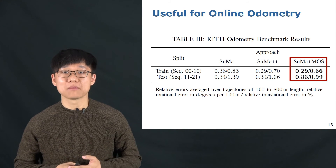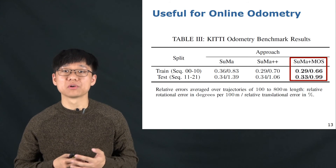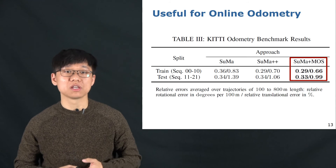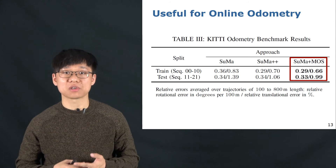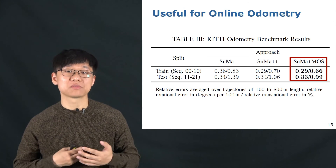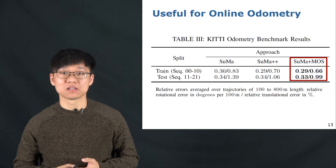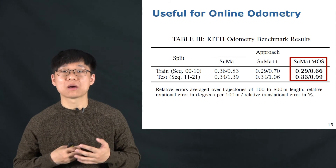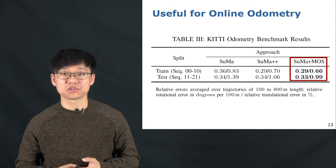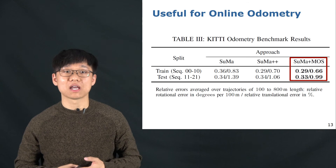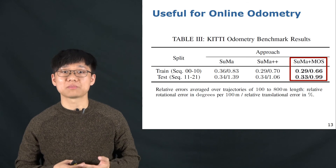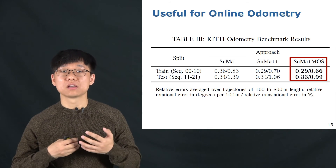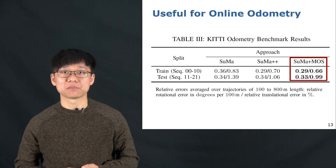As can be seen, by using the proposed LiDAR moving object segmentation to detect and remove dynamic objects from the LiDAR scans, the odometry results of the proposed methods are better than the original Zuma and also Zuma++, which uses full class semantic information.